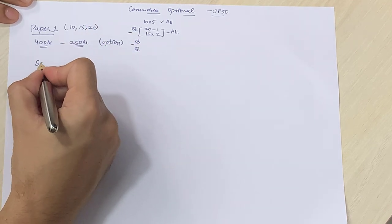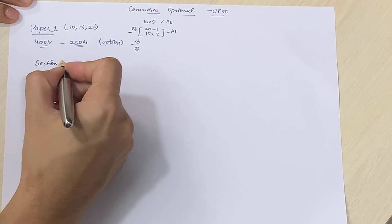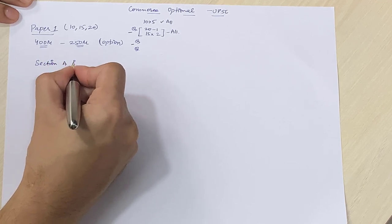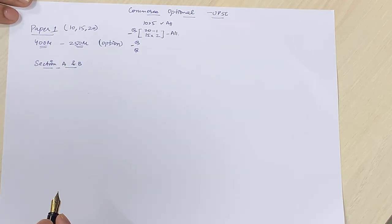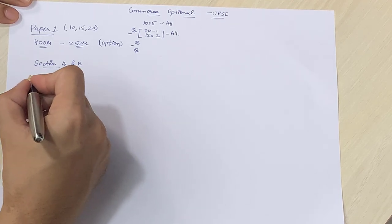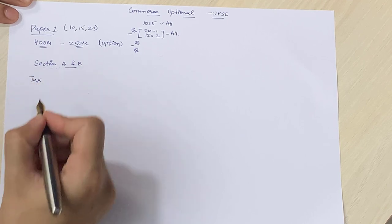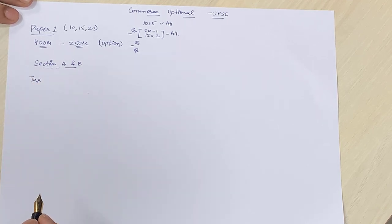If we try and understand the entire paper 1 of commerce optional, we can't divide this section-wise because there is a very good mix of questions created. So section A and section B have to go together. We can divide them, however, topic-wise, which is also very interesting.